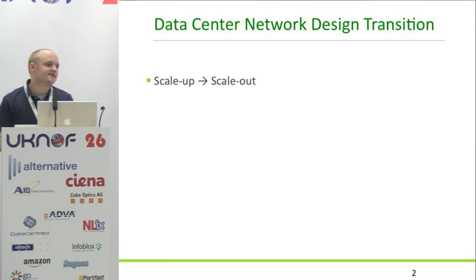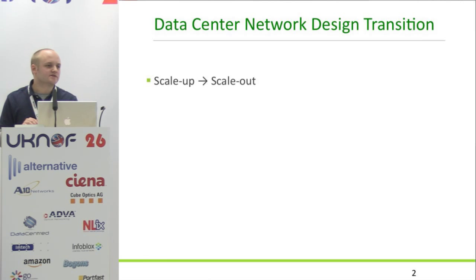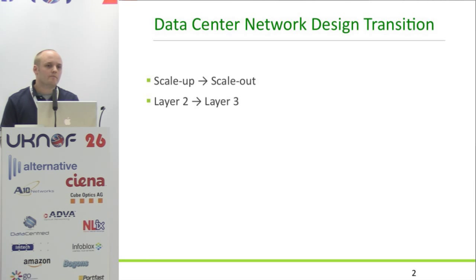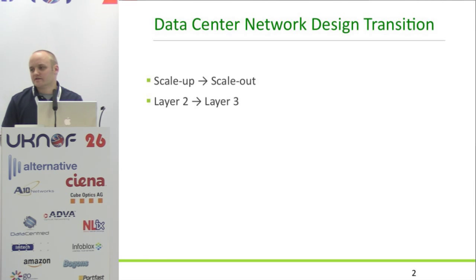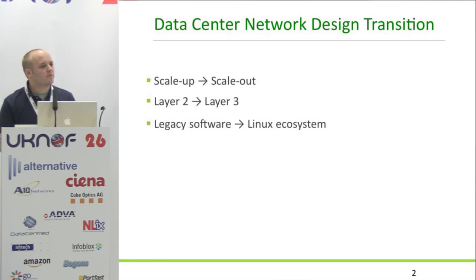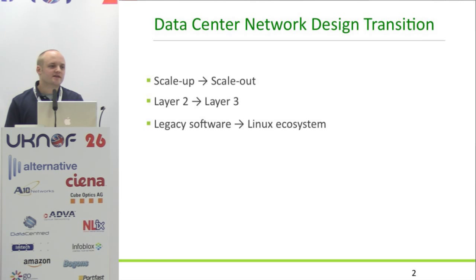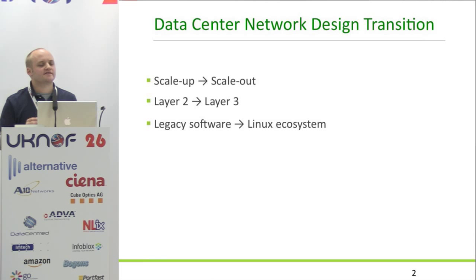We've been seeing in the data center that people are going to scale out the network instead of scaling up, so they're putting in a lot of top-of-rack switches instead of these big chassis switches that were pretty typical a few years ago. We're also seeing companies going from layer 2 to the top of rack to layer 3, so the switches in the top of rack are routing as well. One of the more recent breakthroughs is people starting to look at Linux and running Linux on the switch instead of these siloed devices where the hardware is tied into the operating system.